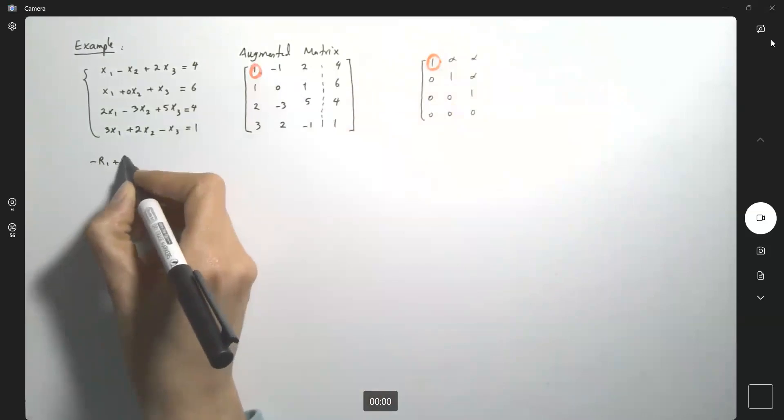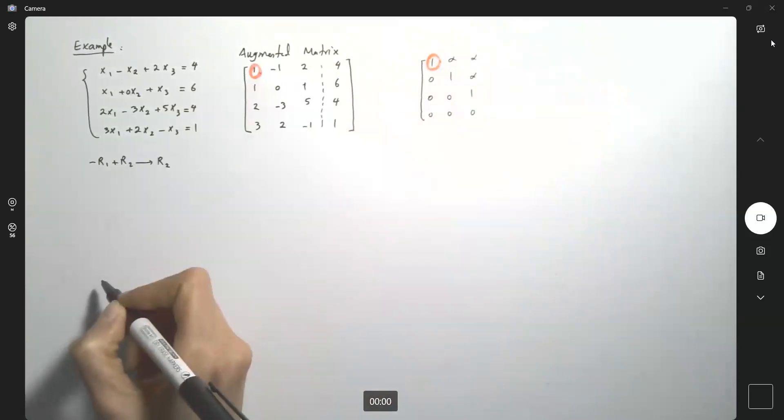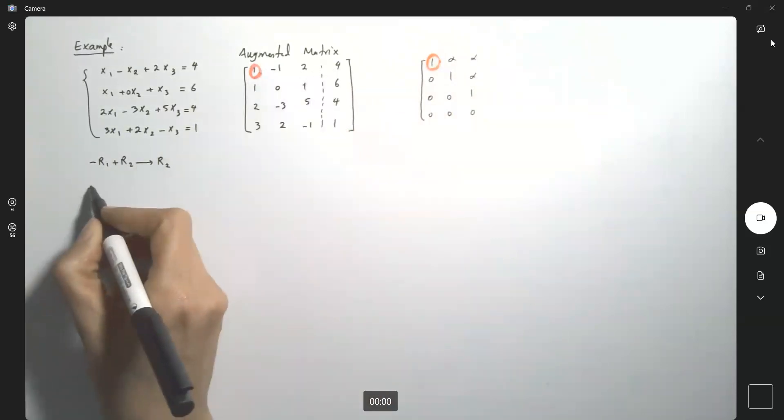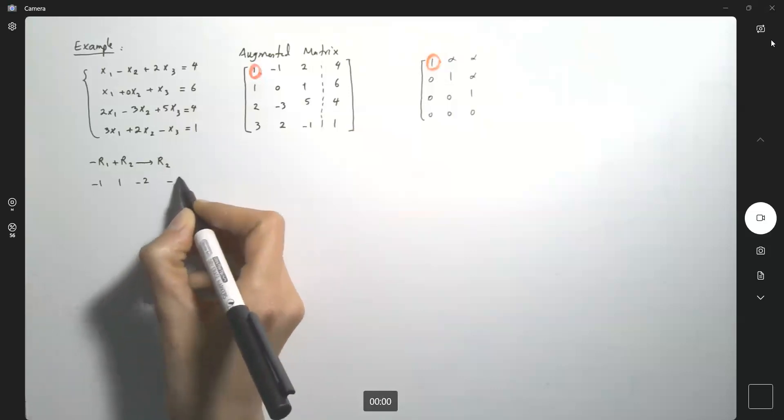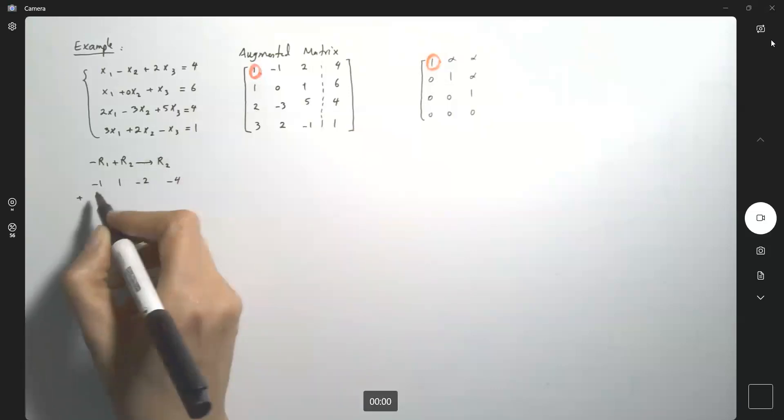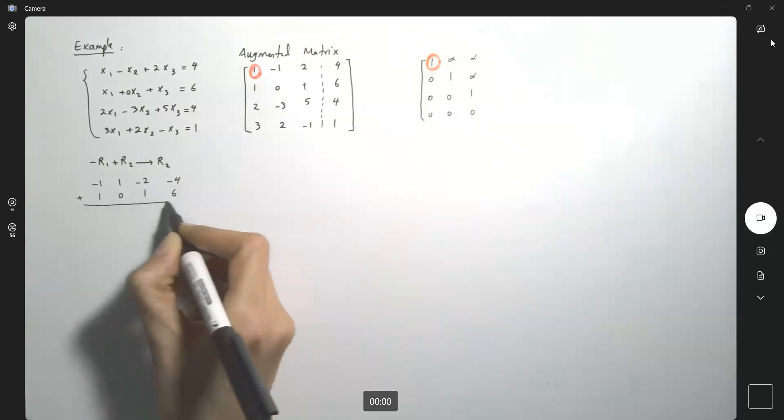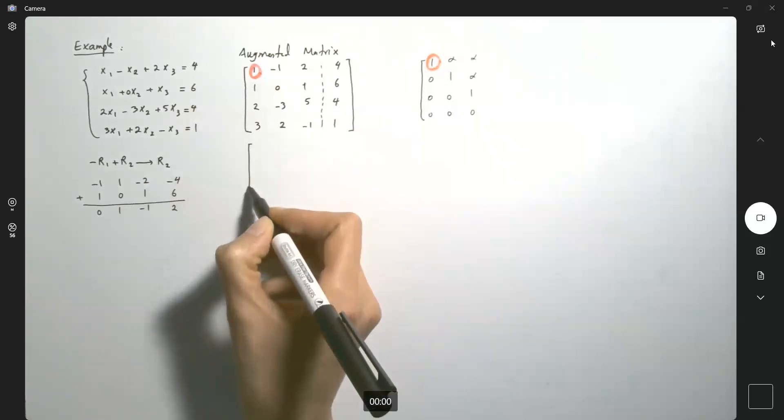Negative r1 plus r2, and this new row is replaced for r2. Negative one multiplied by each element gives us negative one, positive one, negative two, negative four, and add it to r2, which is one, zero, one, and six. Zero, one, negative one, and two. This is replaced for the second row.